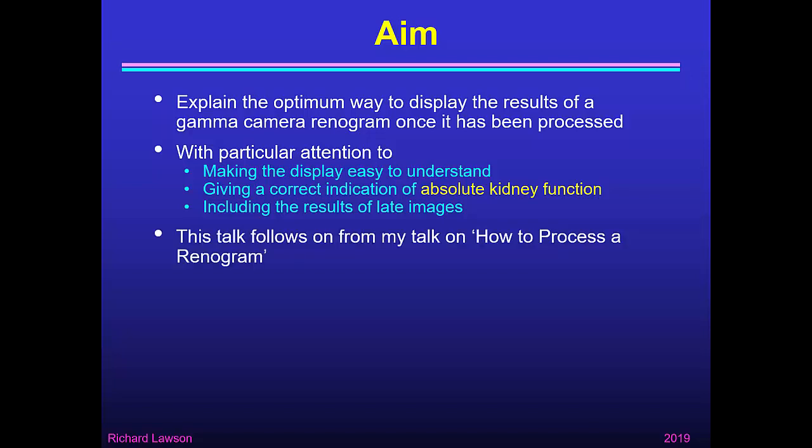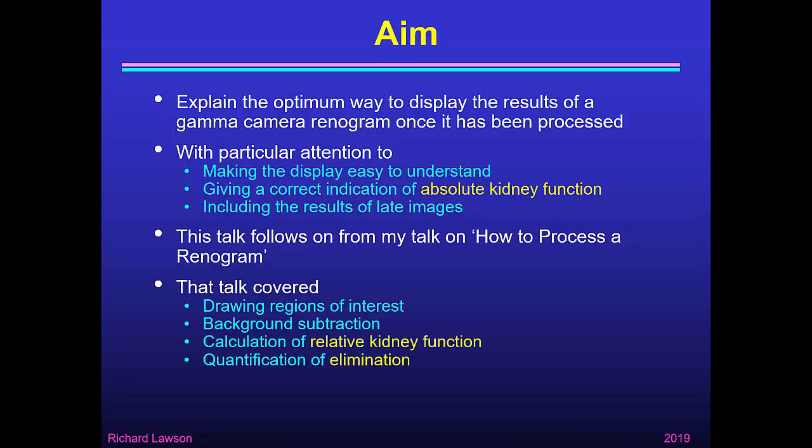This talk follows on from my previous talk on how to process a Rhenogram, in which I talked about how to draw the regions of interest, how to perform background subtraction, how to calculate relative kidney function (that is, one kidney compared with the other kidney in the same patient), and quantification of elimination. So if you haven't already listened to my talk on how to process a Rhenogram, I suggest it's worthwhile listening to at least part of it before proceeding with the rest of this talk on how to display a Rhenogram.